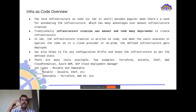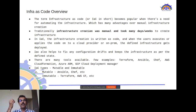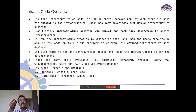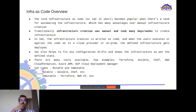Using infrastructure as code also helps fix configuration drift. If someone accidentally deletes a configuration and a server goes down, IaC can ensure the configuration is maintained in its desired state, resolving such drift automatically.